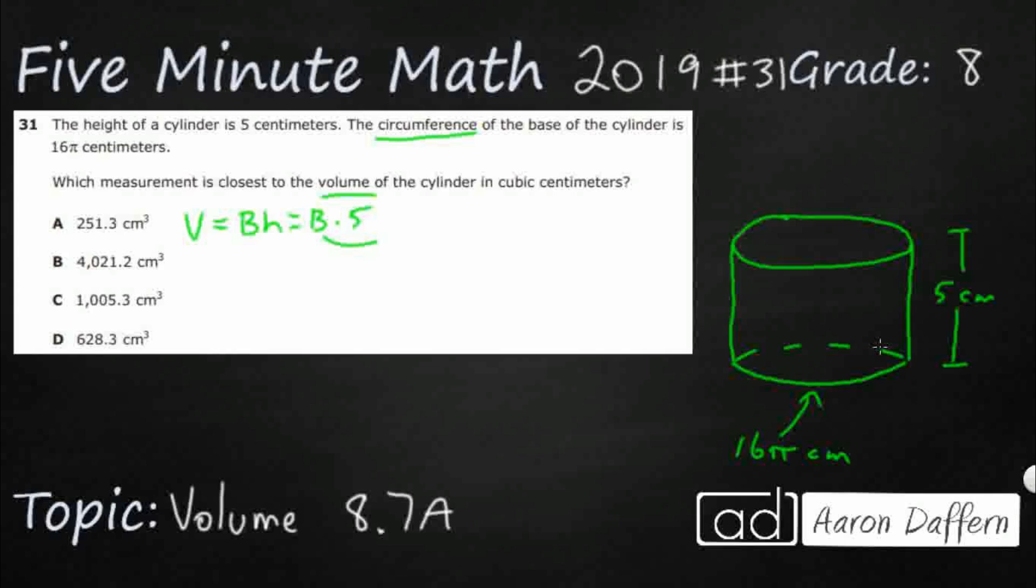So base here, this B, actually means the area. All right, so the area of the base. That's why you can use this exact same formula for a prism or a cylinder, because their bases are different. In this case, our base is a circle. And prisms, it's either a rectangle or a triangle or a cube or a square, depending on what kind of prism you've got.